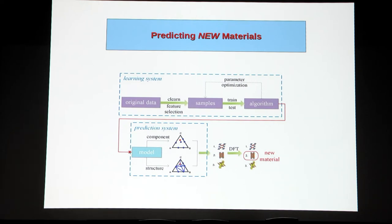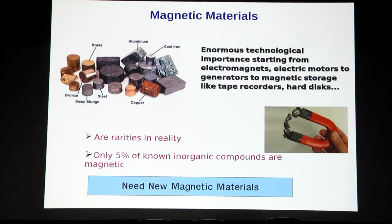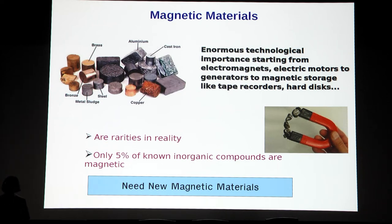The third and most challenging category — Leonardo da Vinci's idea — is: can we predict entirely new materials? I want a material with a targeted property; can we predict a material that does not yet exist in the literature? The example I will show is magnetic materials, which have enormous technological importance — from electromagnets and electric motors to generators and magnetic storage like tape recorders and hard disks. Only 5% of known inorganic compounds are magnetic, so we need new magnetic materials.